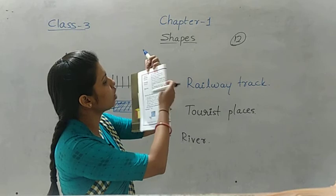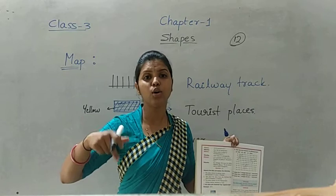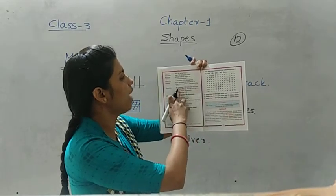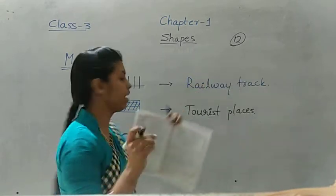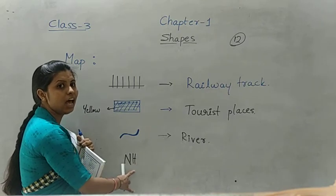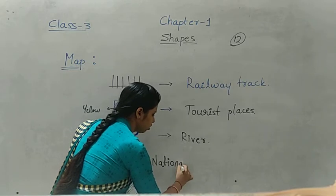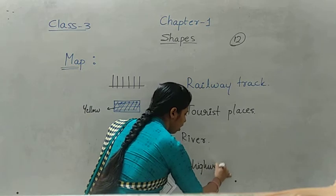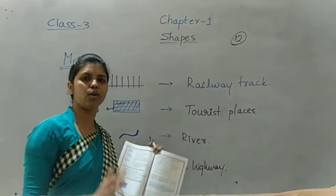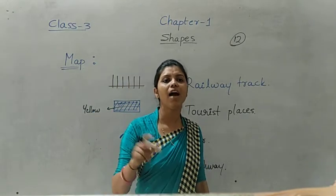Nishan asks: Is it necessary to come back to Bagalcoat for going to Bagnu by bus? Niharika answers: No Nishan, we have National Highway NH 30. NH means N for National, H for Highway - National Highway. We are taking this road to reach Bagnu by using the National Highway.